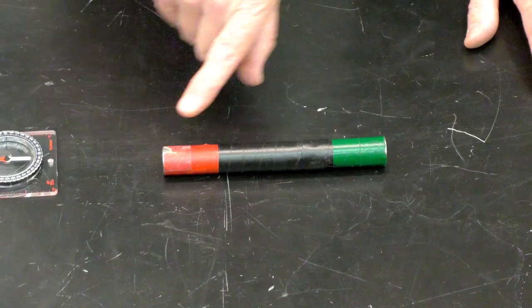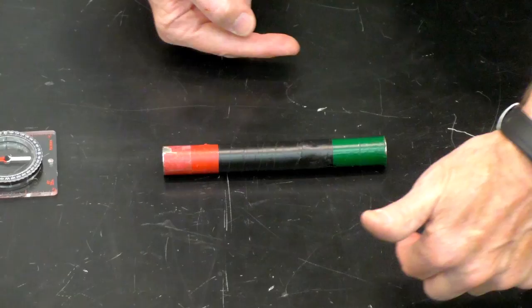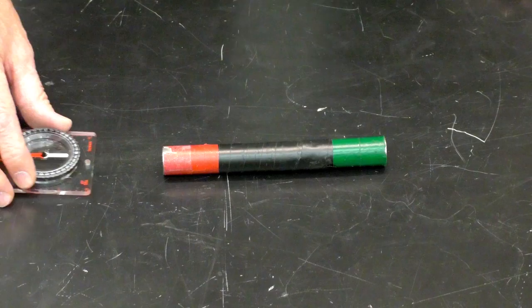The magnetic field lines emanate from the north pole. So they come out of the north pole, come around the magnet, and then into the south pole. And I can demonstrate that using this compass.